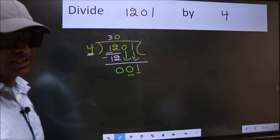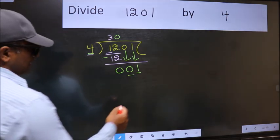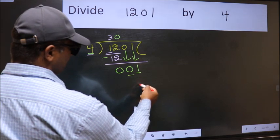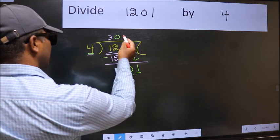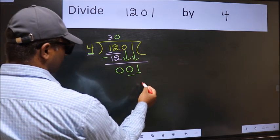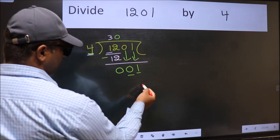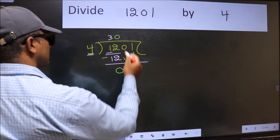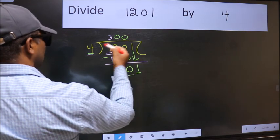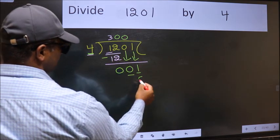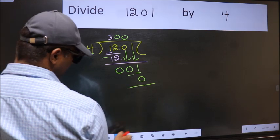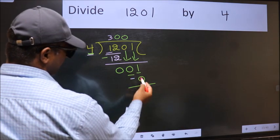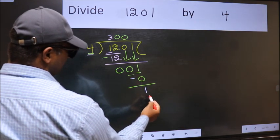Instead, what you should think of doing is, which number should we take here? If I take 1, we will get 4. But 4 is larger than 1. So what we should do is take 0. So 4 into 0, 0. Now we should subtract. 1 minus 0, 1.